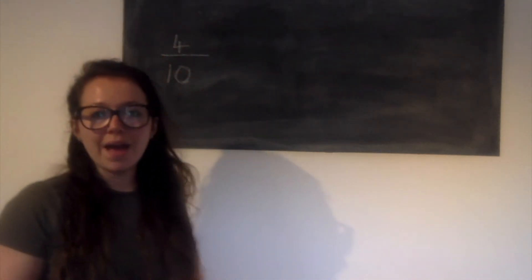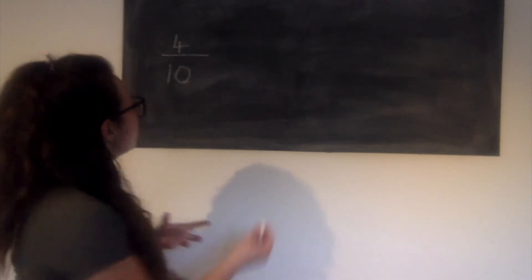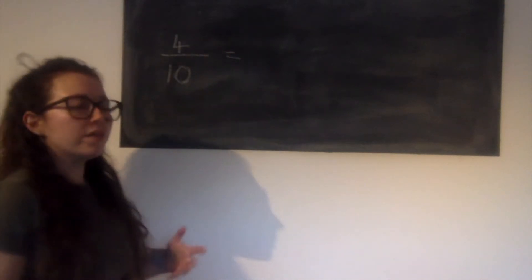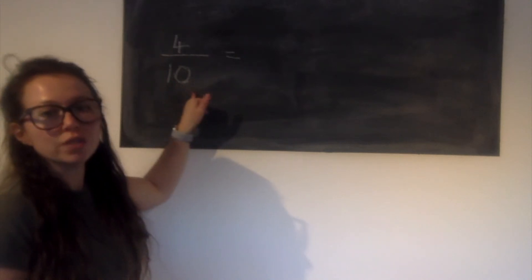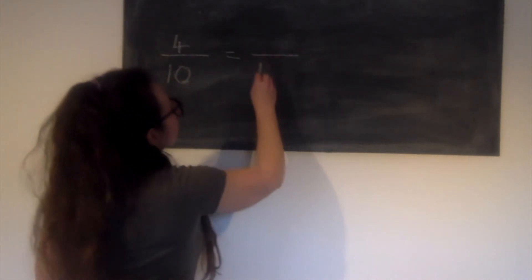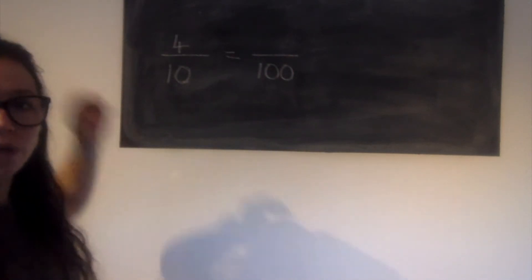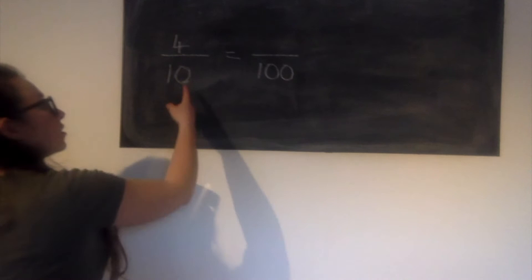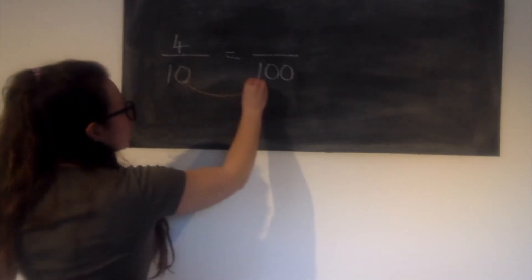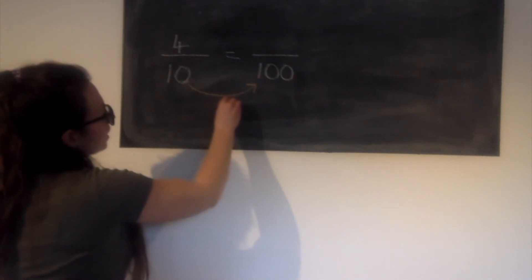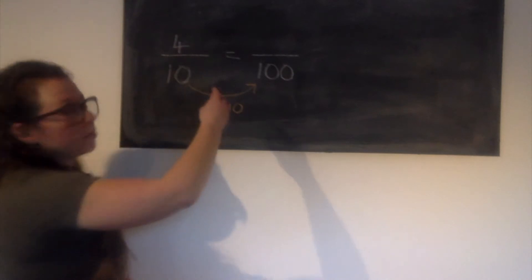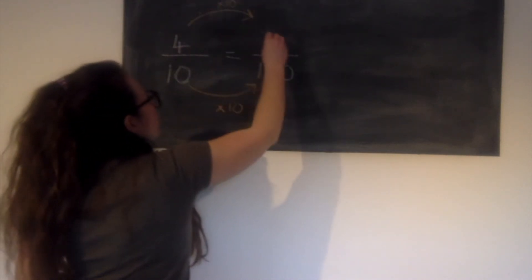Now thinking about our last bit of learning, we need to make sure that because we're turning it into a percentage, my denominator is 100, it is out of 100. So we learned equivalent fractions. Let's have a think about what we have done to the denominator to get from 10 to 100, and we've multiplied it by 10. So we must do the same to the numerator. So 4 multiplied by 10 gives us 40.